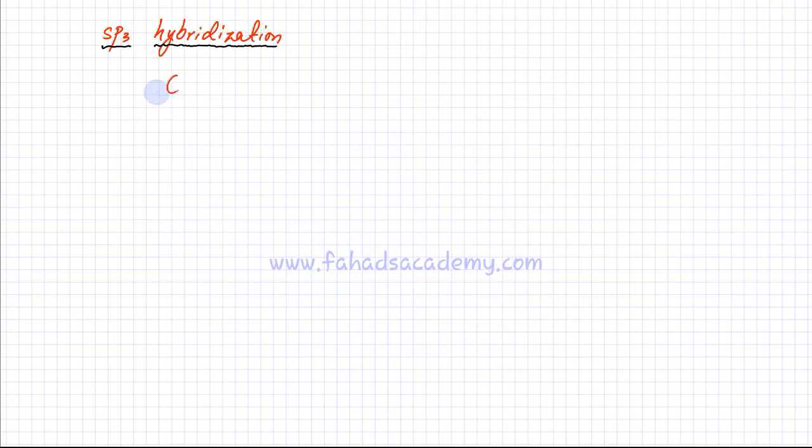In this video lecture I'm going to discuss carbon's sp3 hybridization. Carbon has a total of six electrons. If you write the electronic configuration of carbon, the 1s orbital has two electrons.